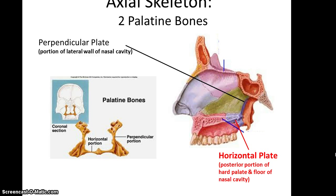The palatine bones — we have two of these. They're sort of L-shaped, with a perpendicular portion forming part of the lateral wall of the nasal cavity and a horizontal portion that forms the back, or posterior portion, of the hard palate as well as the floor of the nasal cavity. There is also a tiny bit that goes into the orbits.